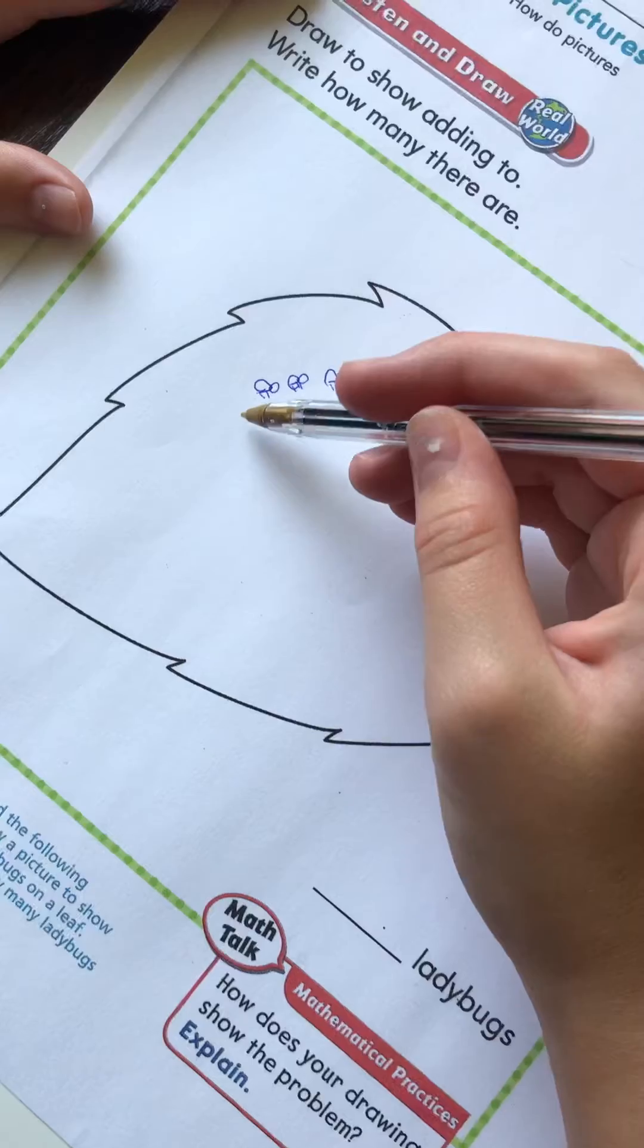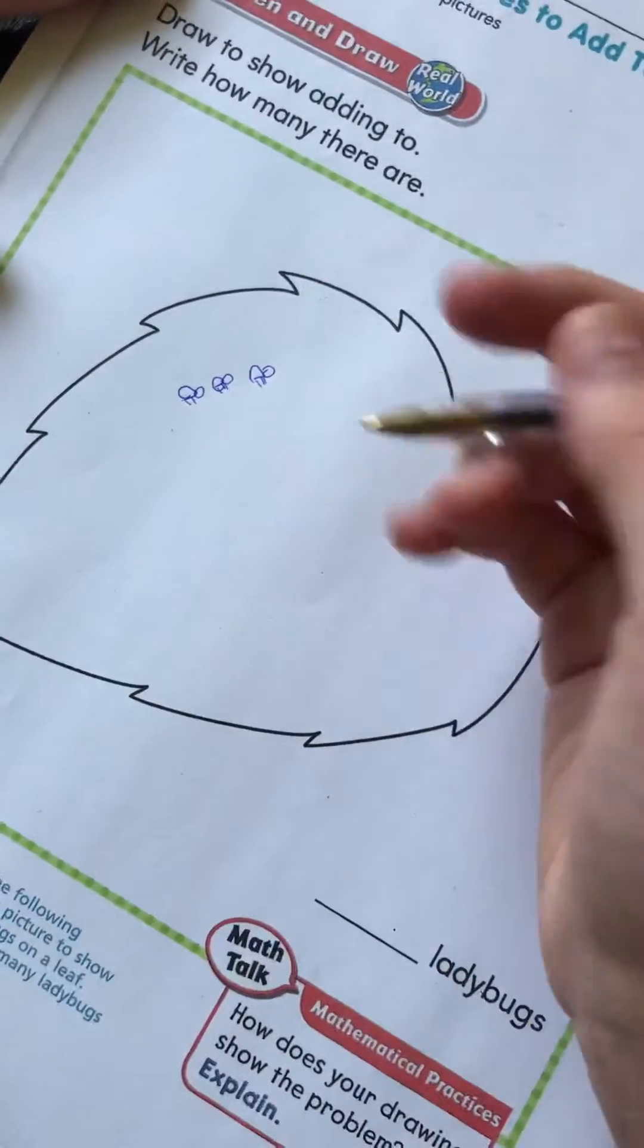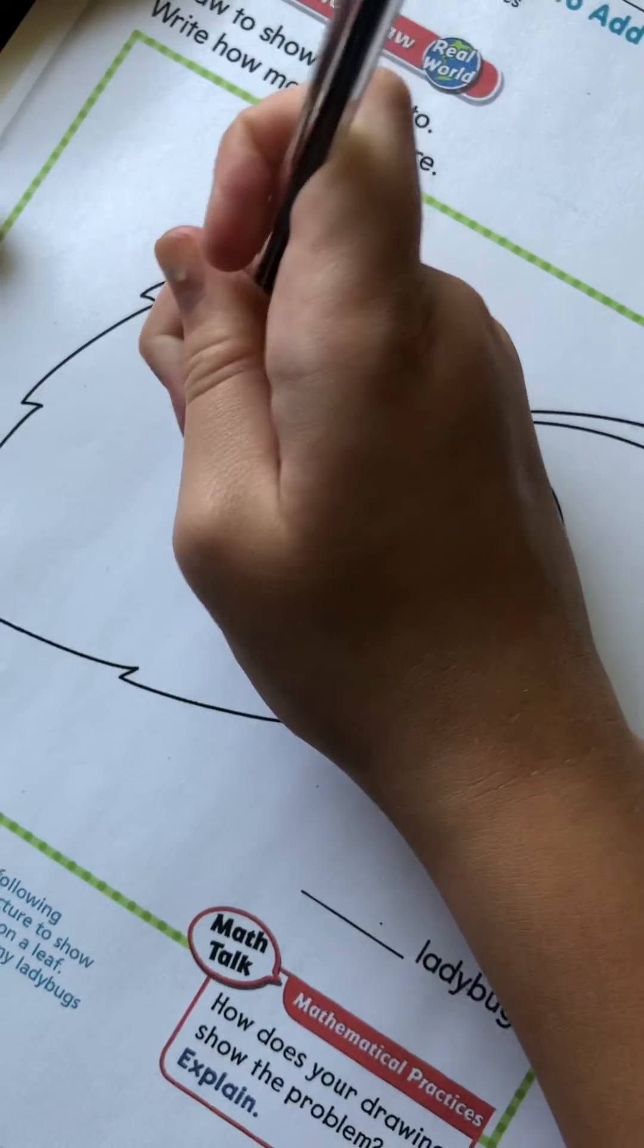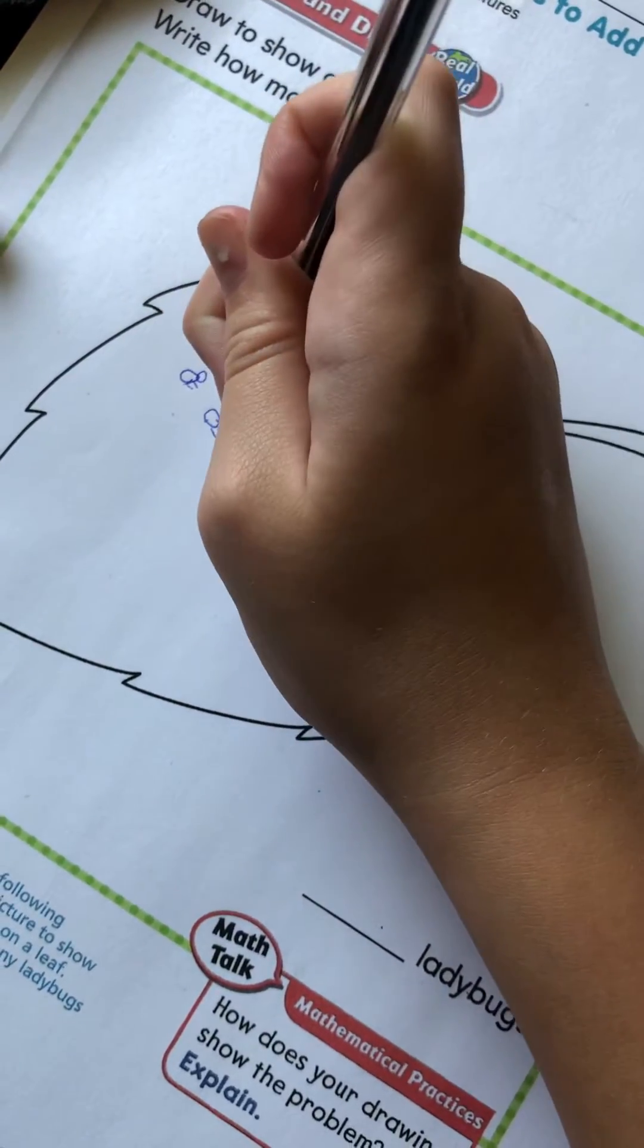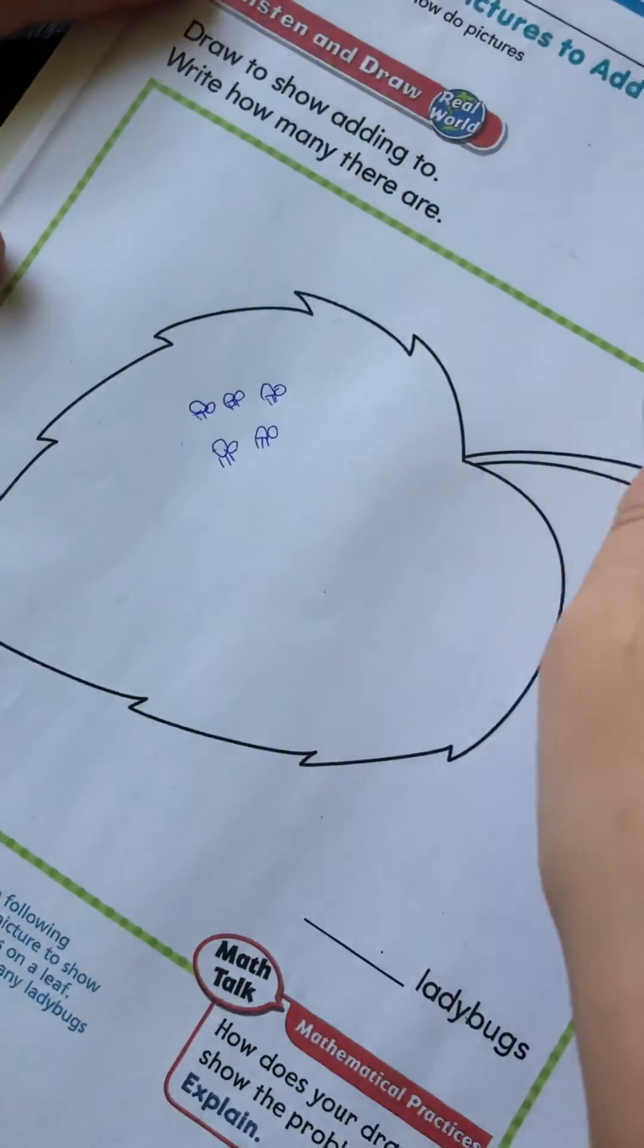So there are three ladybugs on the leaf. But then it says two more ladybugs join them, which means I'm going to put one and two more ladybugs.